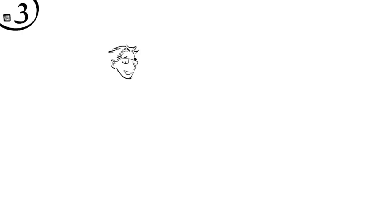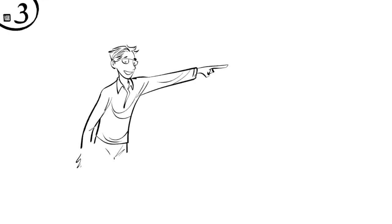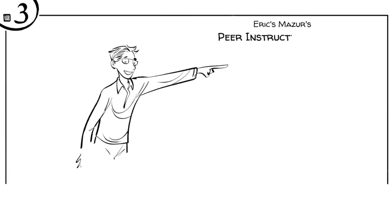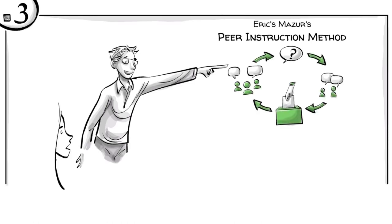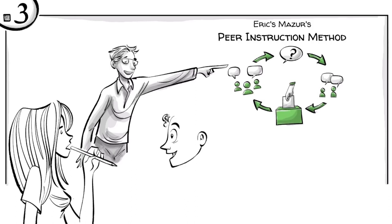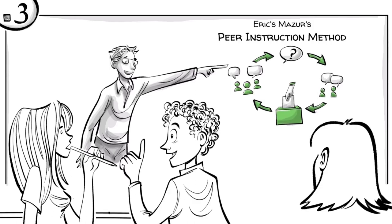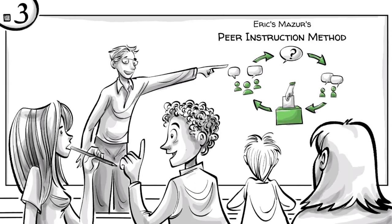Step 3. Without telling the students how they voted and following Eric Mazur's peer instruction method, which involves questions, peer discussions, votes, and group discussions, the students then discuss the question and their answers with one or two classmates, ideally with someone who disagrees with their own opinion.